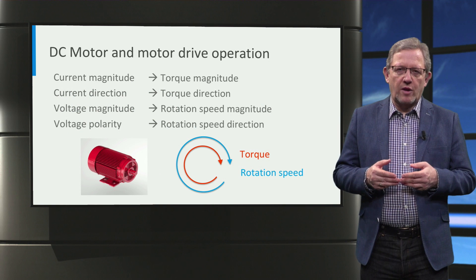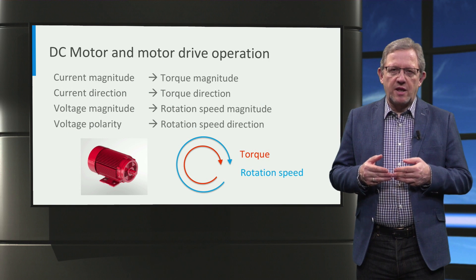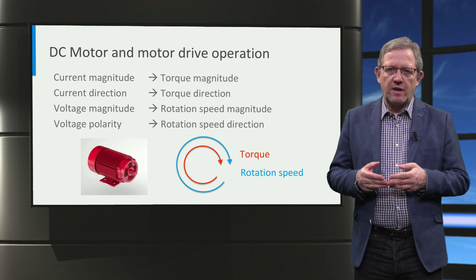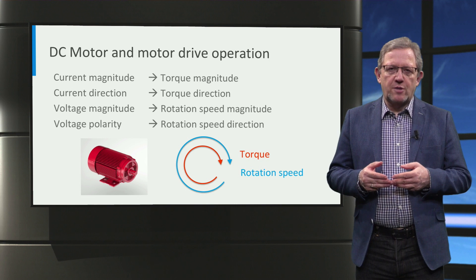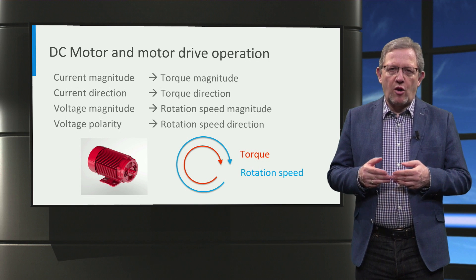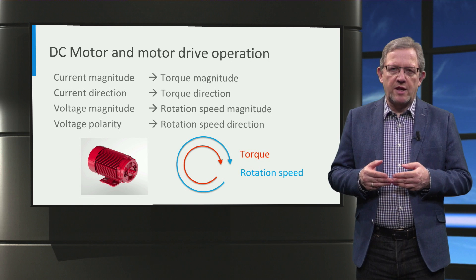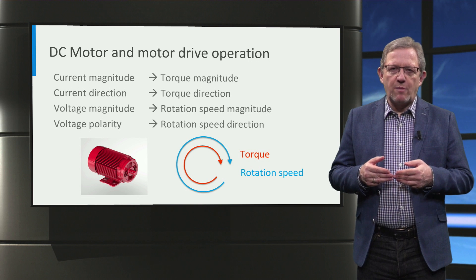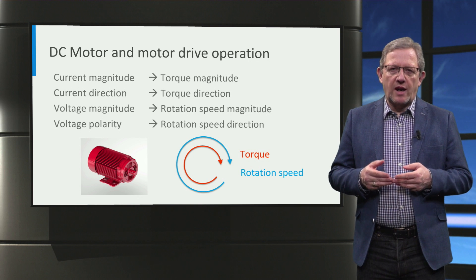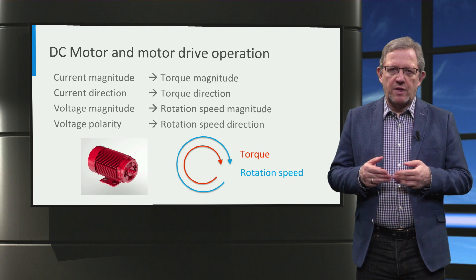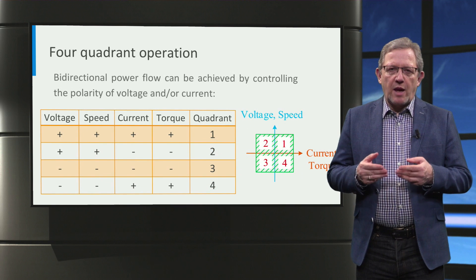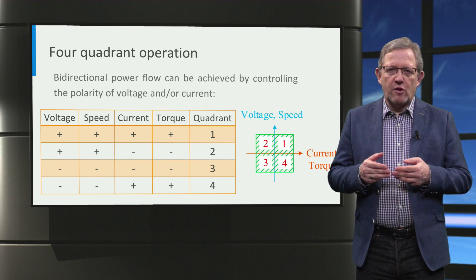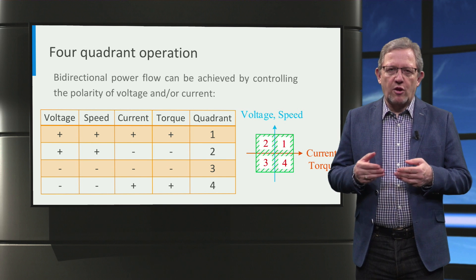If a DC motor and DC electric drive are used, we can generalize that torque magnitude and direction is dependent on the current magnitude and direction respectively. Similarly, the speed of rotation and direction is dependent on the voltage magnitude and polarity respectively. So in order to control the torque and rotation of a motor, we need a motor drive that can control the current and voltage of the motor respectively. In this table we can see the four combinations of motor inverter voltage and current polarity and the corresponding motor rotation and torque for a DC motor.